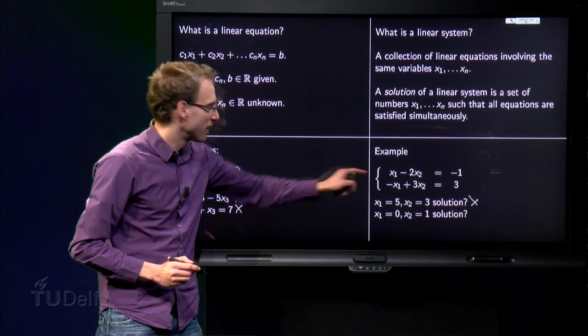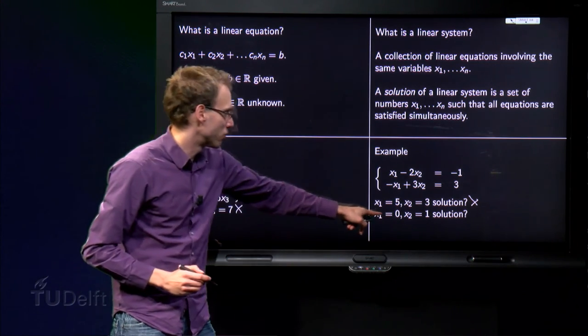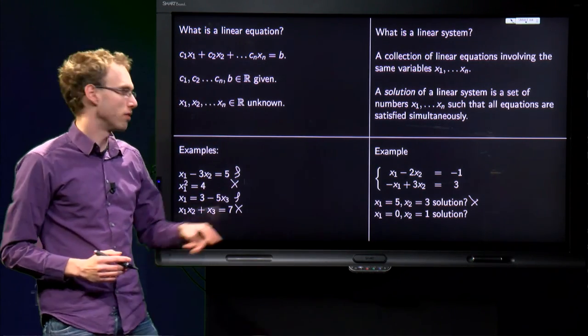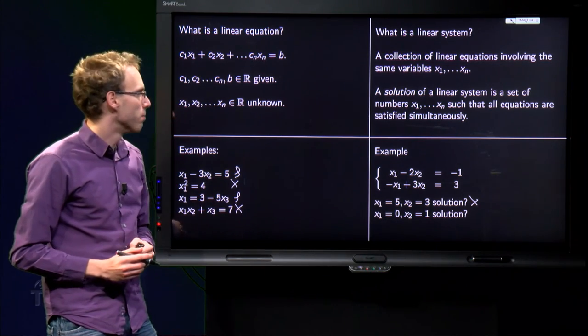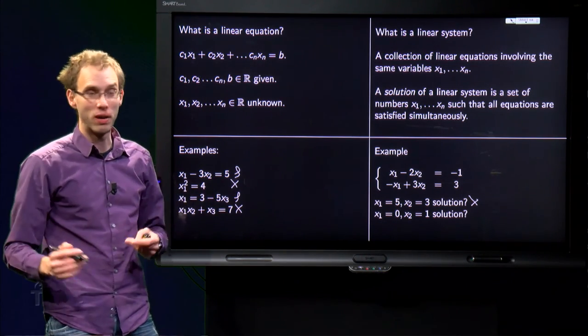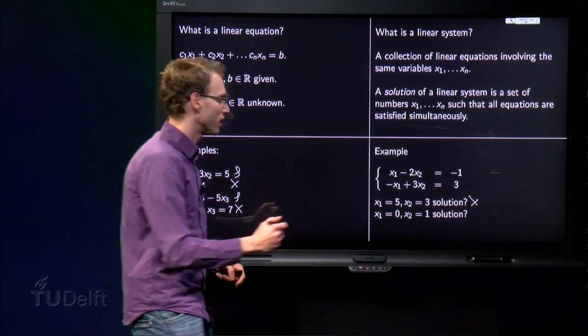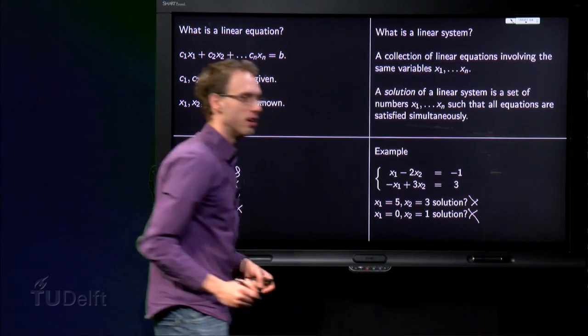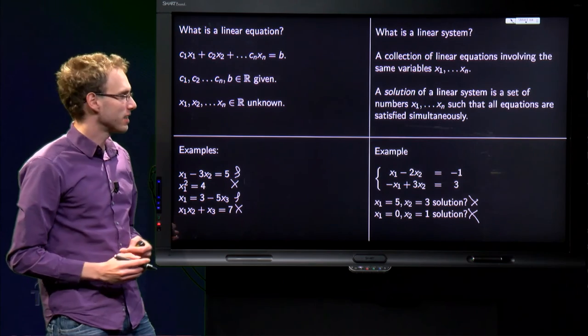Then let us try to satisfy the second equation, taking X1 equals 0 and X2 equals 1. So we satisfy the second equation. But then we get 0 minus 2 equals minus 1. We do not satisfy the first equation. So this is not a solution of the linear system.